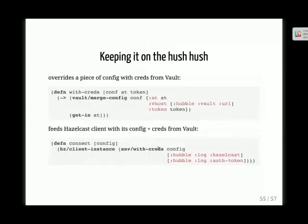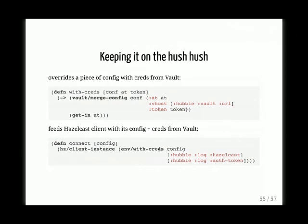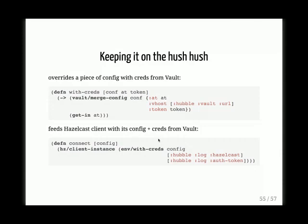The secret part comes from Vault. We go out to Vault, give it the auth token, and Vault gives us back our credentials. We never merge these credentials with the actual configuration — they're only available at the point where we create a Hazelcast client instance. As we connect the instance, we give it credentials at runtime, but those credentials are never exposed anywhere else — not merged with config, not recorded anywhere. We just go to Vault, get the credentials, and merge them into Hazelcast when creating the client connection.